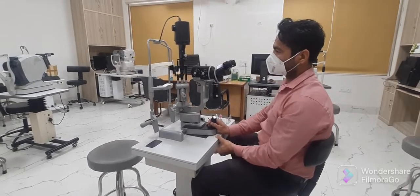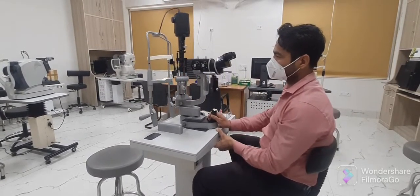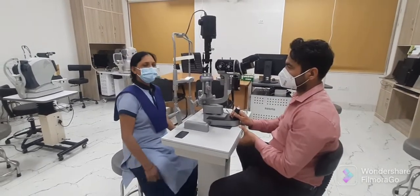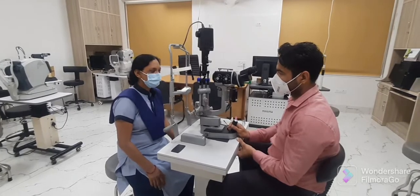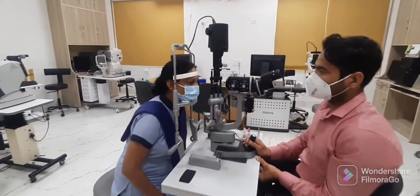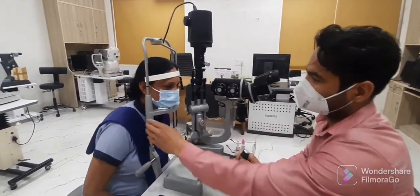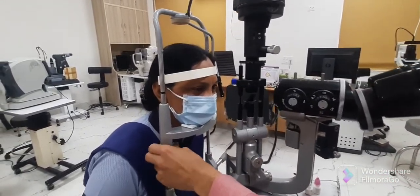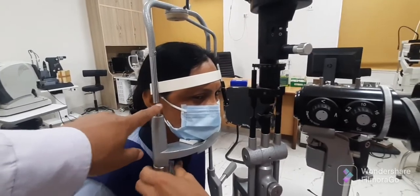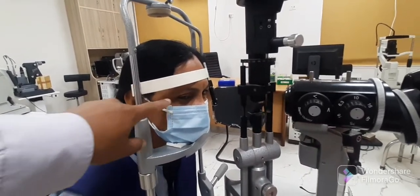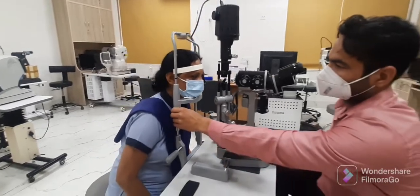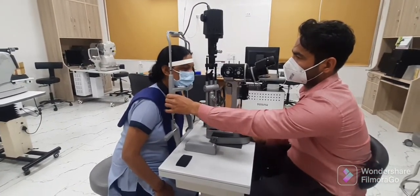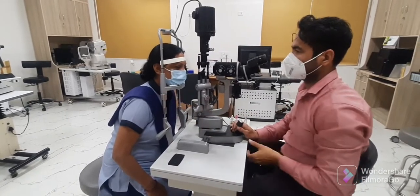The next most important step is to adjust the height of slit lamp according to the sitting position of the patient. The height of slit lamp will be adjusted according to the patient, and the patient is rested on the chin rest and headrest. Adjust the knob so that this black mark should align to the temporal canthus of the eyeball, and this is the proper positioning of the patient on the slit lamp.